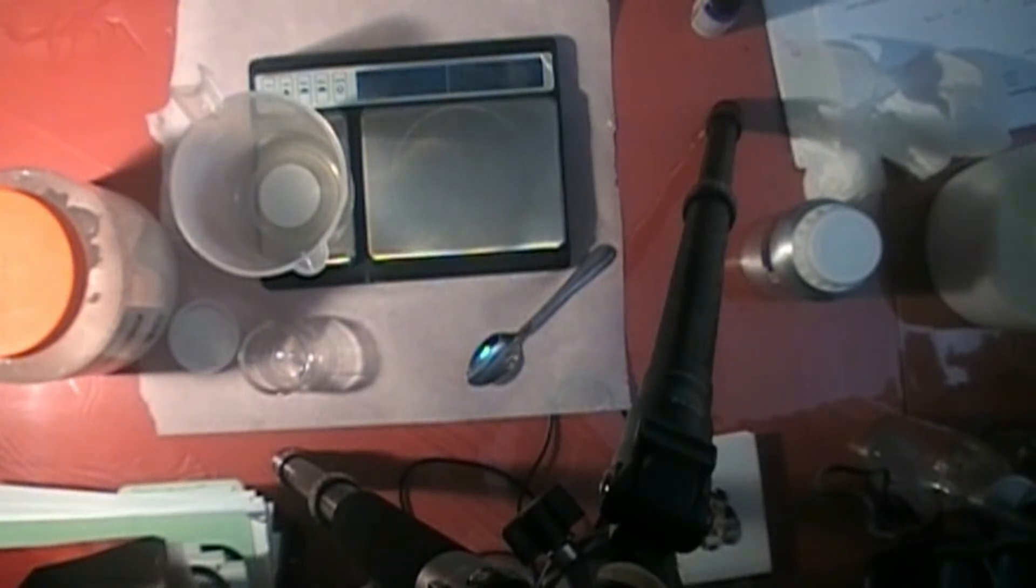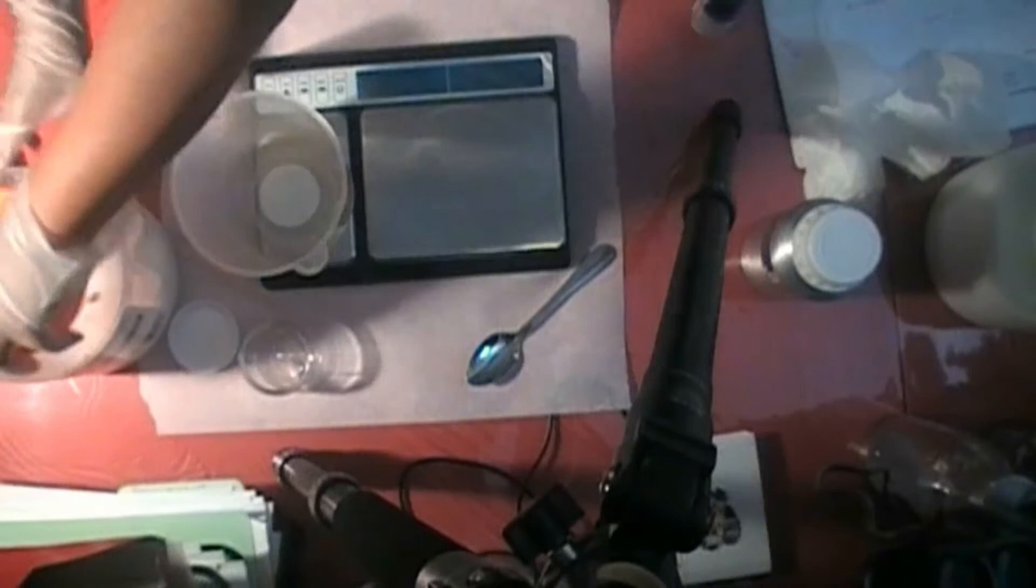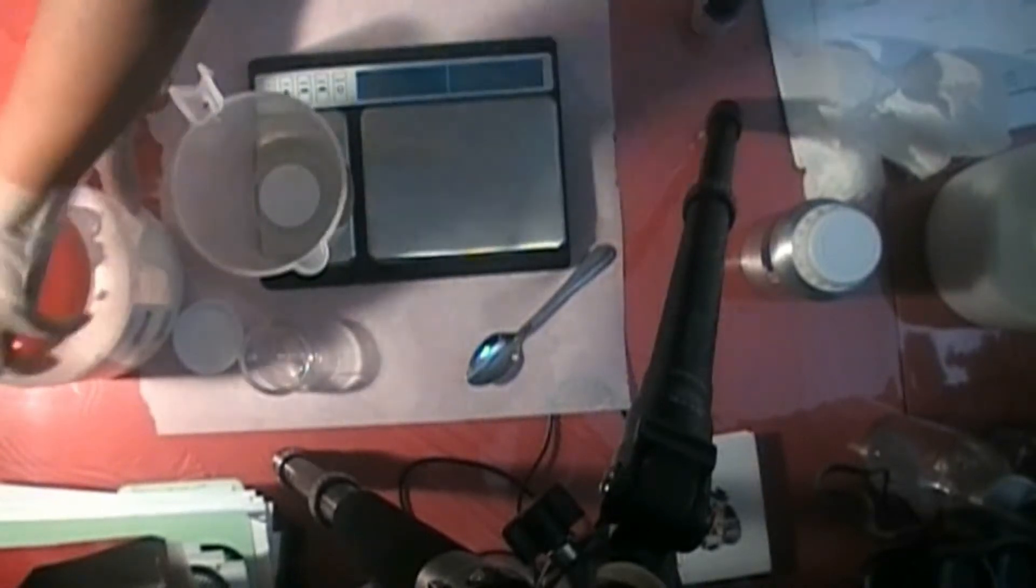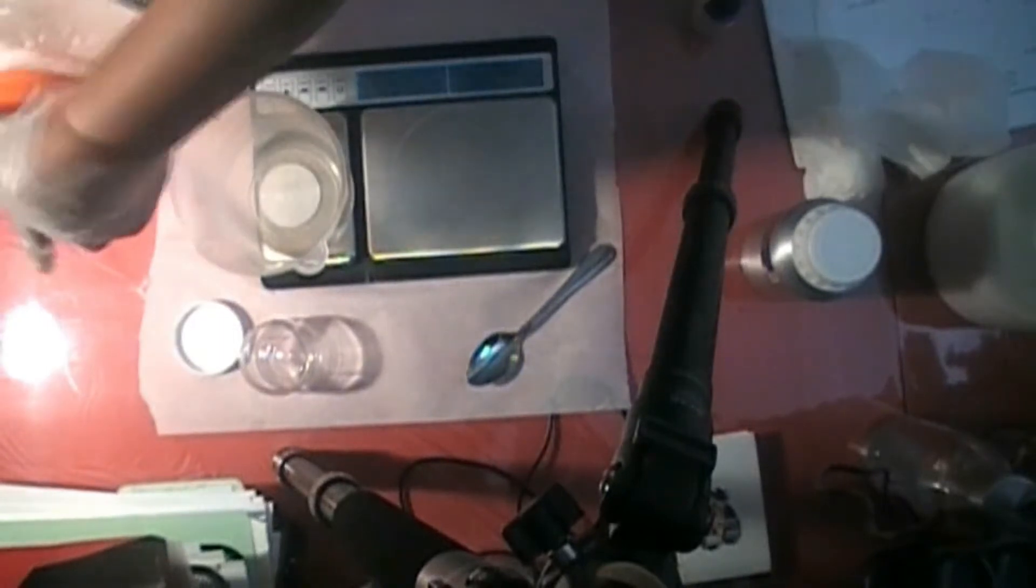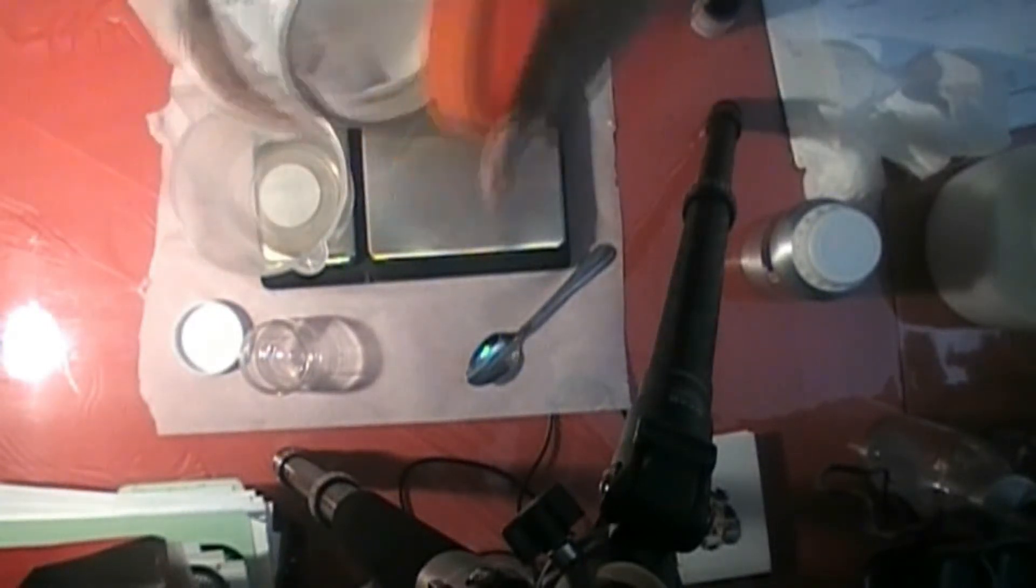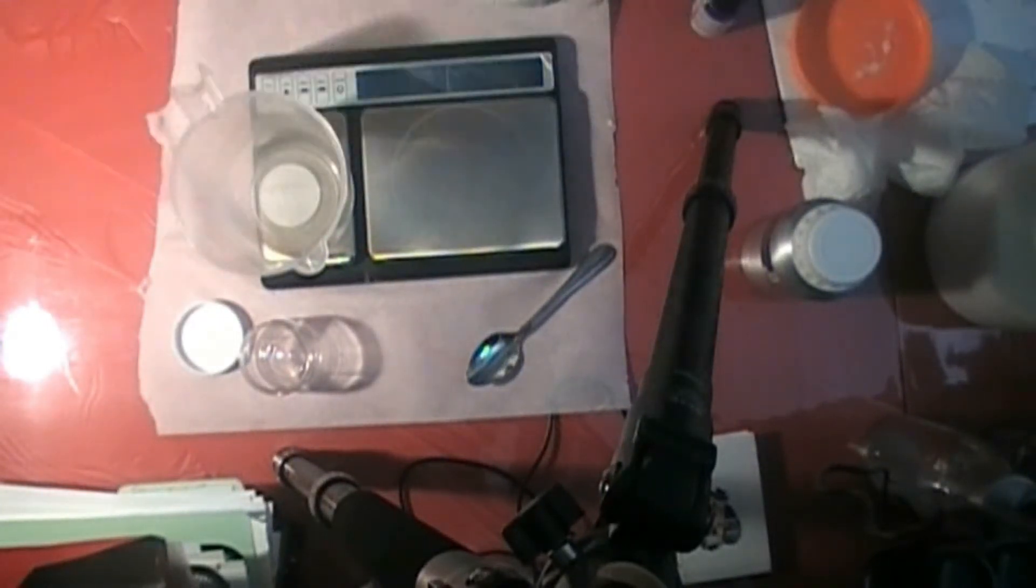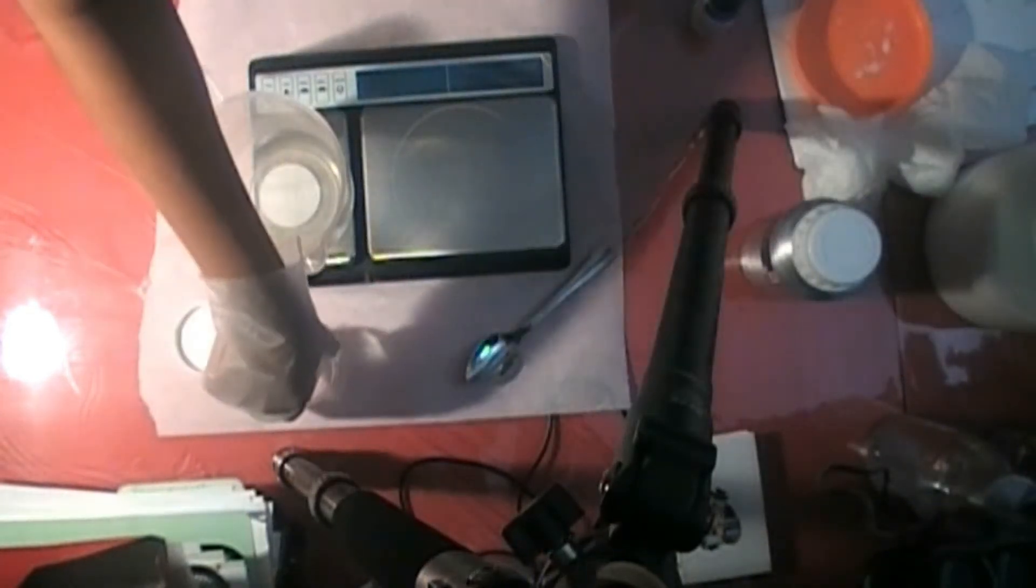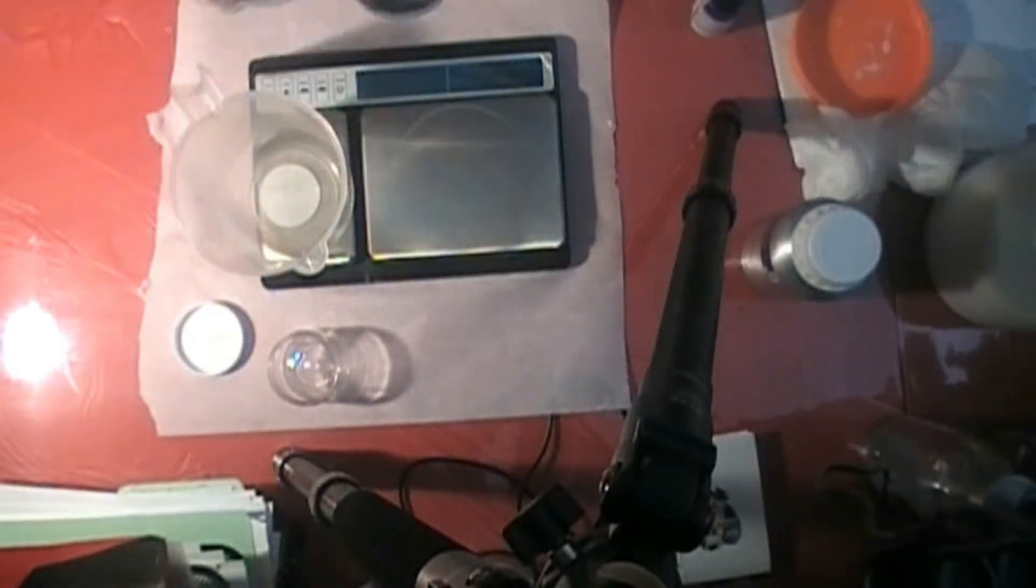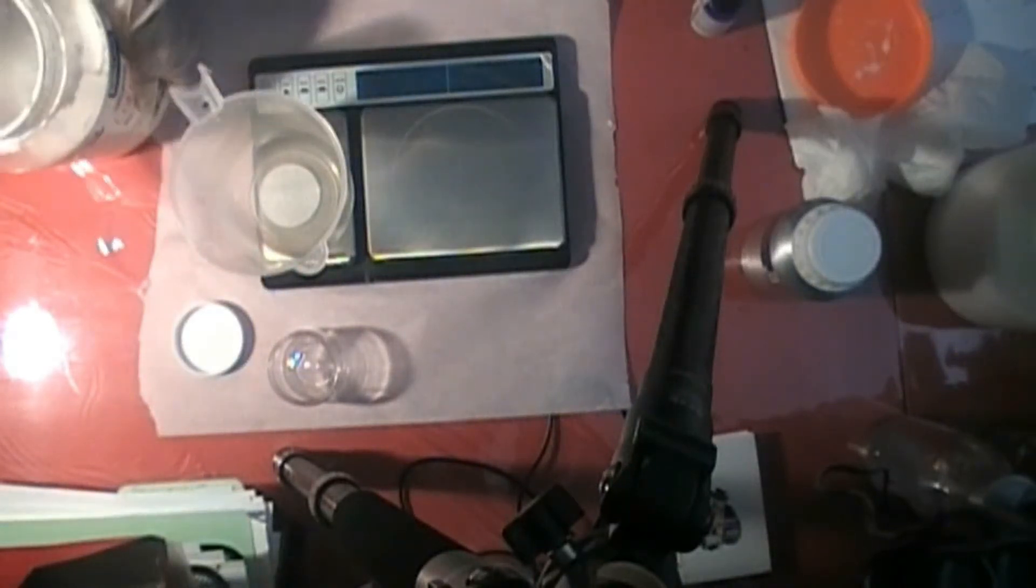So our first ingredient is some organic coconut oil. I'm only making a small four-ounce jar. This is just for tutorial purposes and for myself.